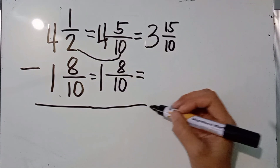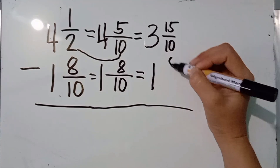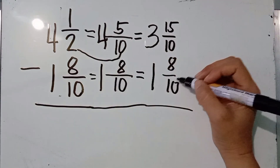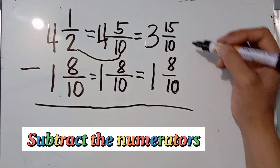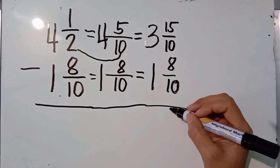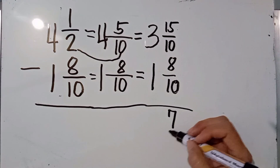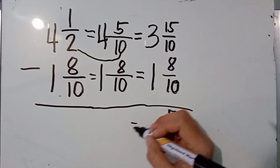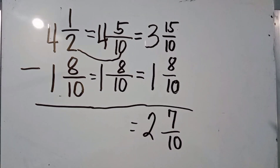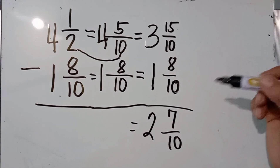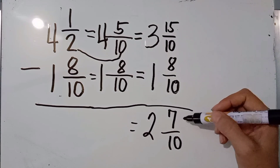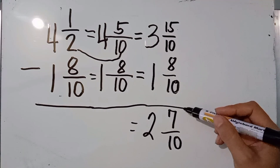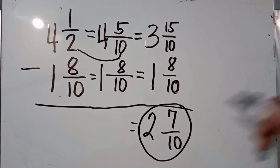Just copy the bottom fraction as it is. Now subtract the numerators again: 15 minus 8 equals 7. Copy the denominator 10. Then subtract the whole numbers: 3 minus 1 equals 2. The fraction 7 over 10 is already in lowest terms, so there is no need to simplify. Our final answer is 2 and 7 over 10.